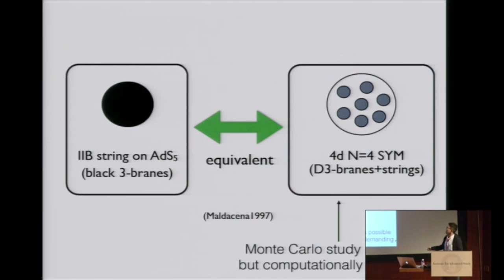In AdS-CFT correspondence, type IIB string on AdS5 should be equivalent to four-dimensional N=4 super Yang-Mills. We can study it on computer in principle, and some people are trying, but it's computationally rather demanding. So I want to have a computationally cheaper setup in order to learn detail about quantum gravity.